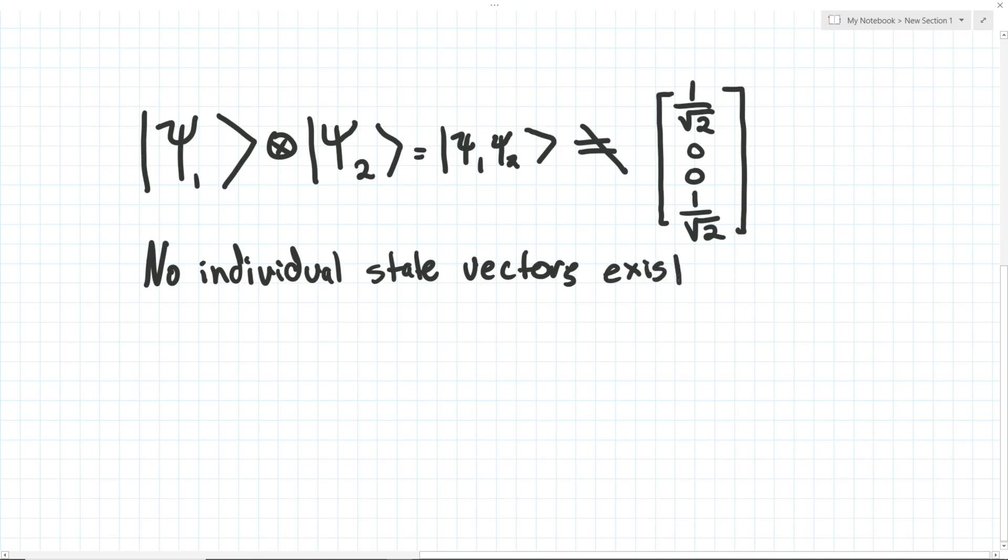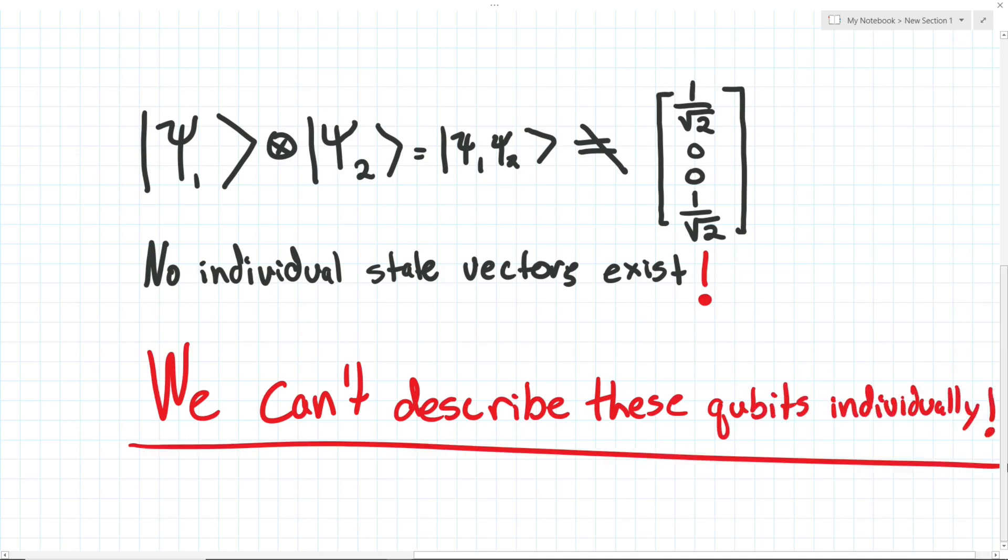At first, this seems like a pretty trivial statement. But think about for a moment what this is telling us. If we have two entangled qubits, we have completely lost the ability to mathematically describe them as individual things, because we can no longer decompose them into two qubit state vectors. This is a crazy concept.